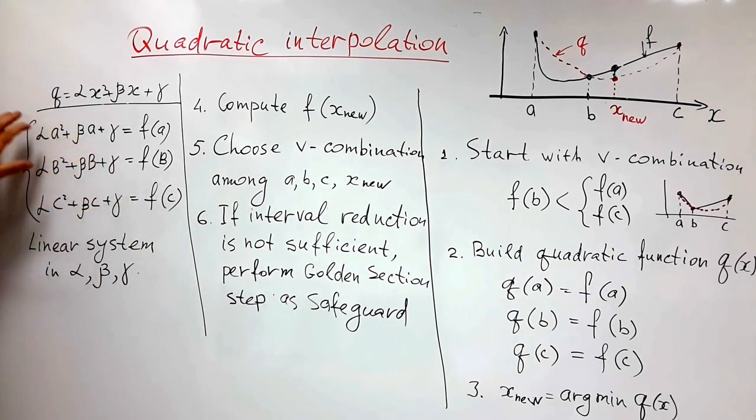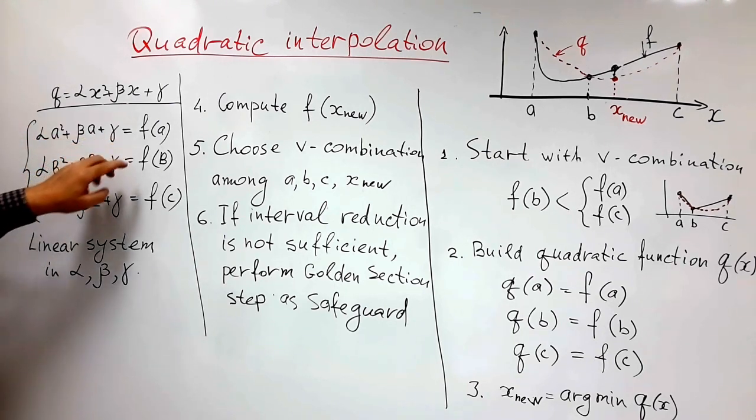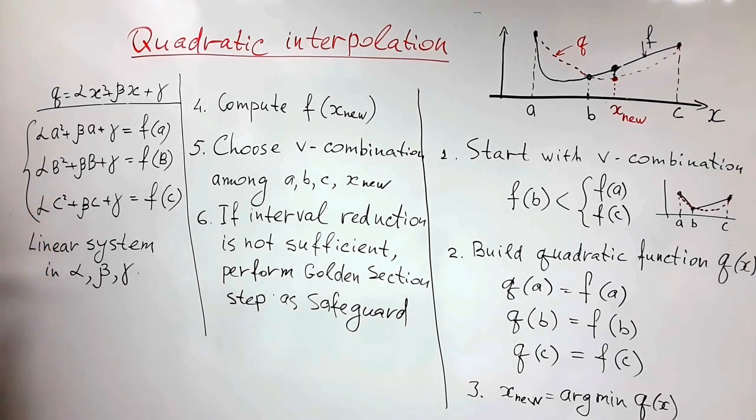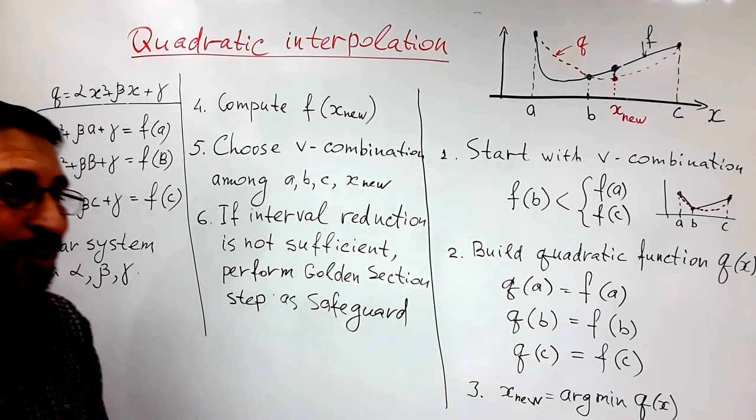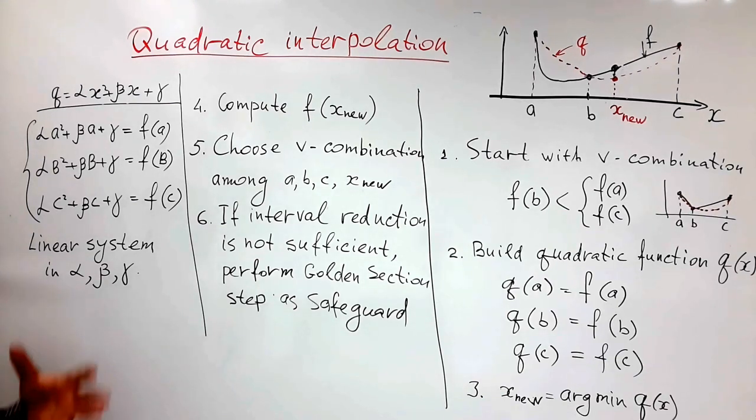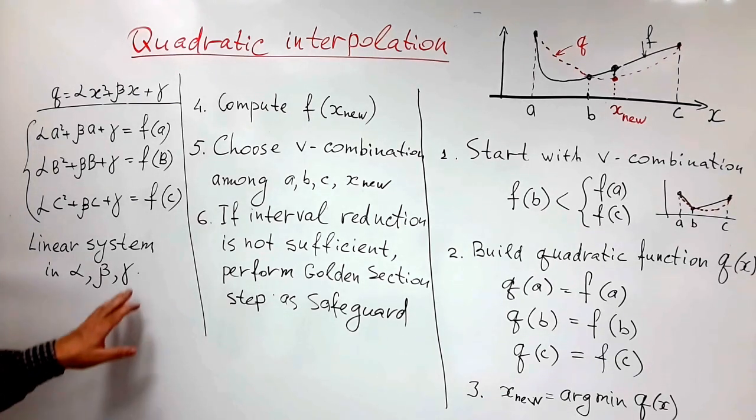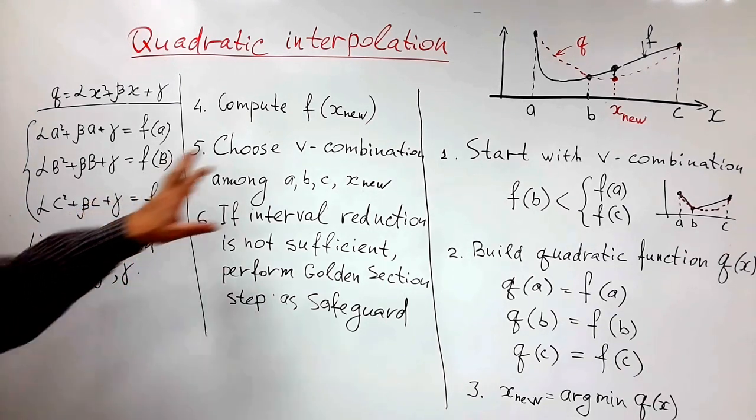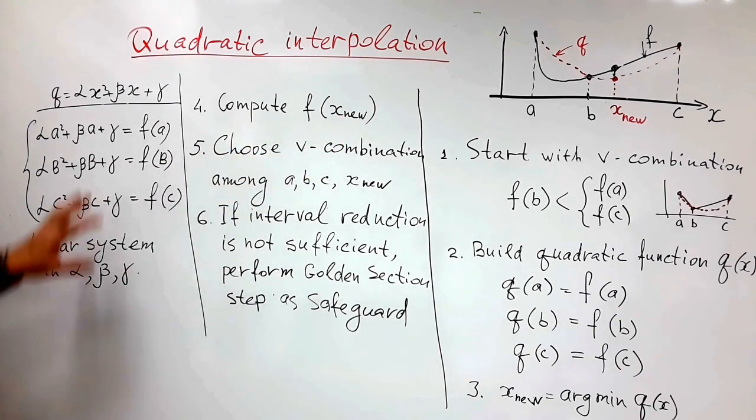Pay attention that what we need to find is alpha, beta, and gamma, and this system of equations is linear with respect to them. So A square plus A and so on are numbers. We solve this linear system of equations and you may find in textbooks a nice way. This is a special system and there is a nice way to treat it numerically in a stable way. And then you find this polynomial or even directly find the minimizer of polynomial based on all those values.